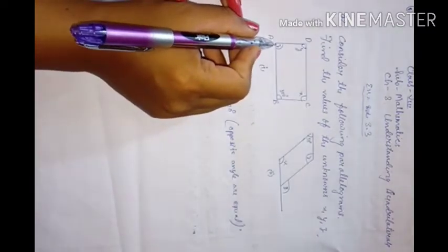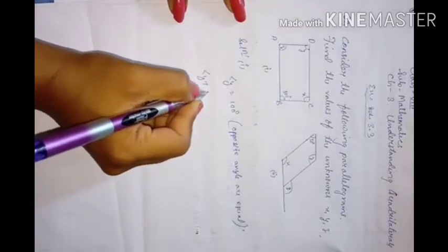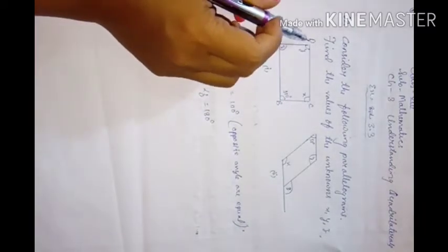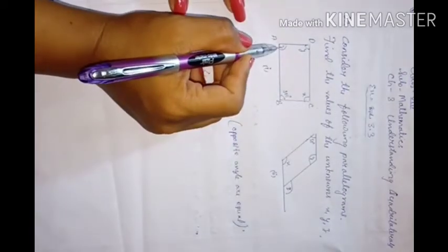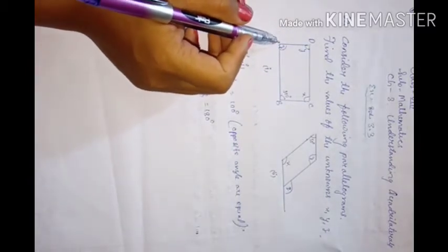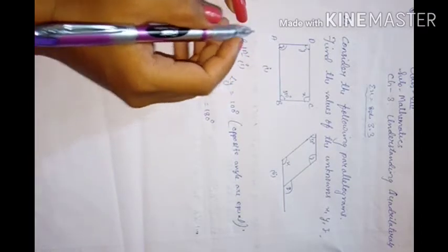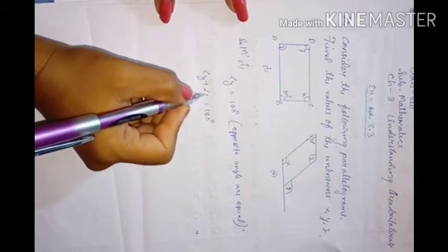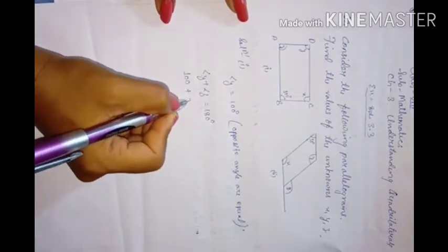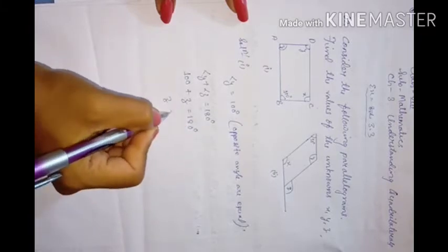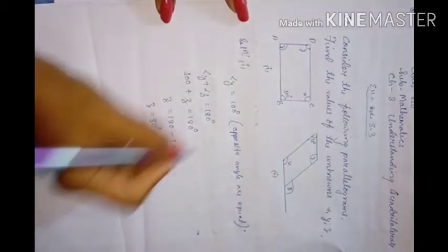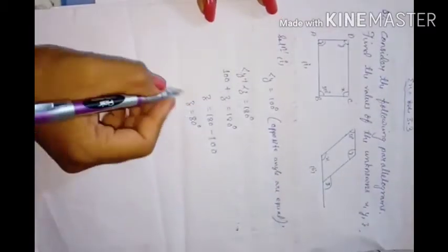For angle z: adjacent angles sum to 180 degrees, so y plus z equals 180 degrees. Since y equals 100, we get 100 plus z equals 180, so z equals 80 degrees.